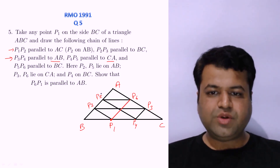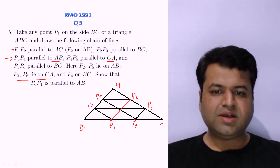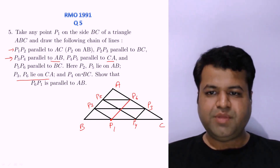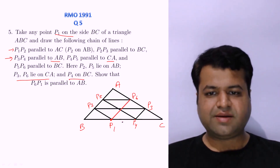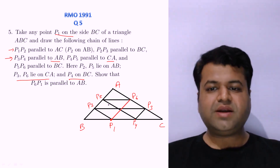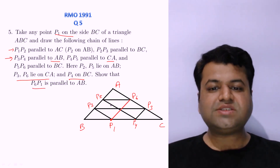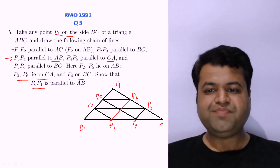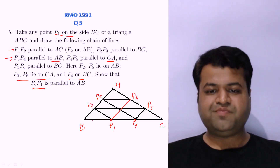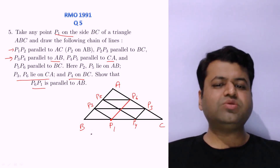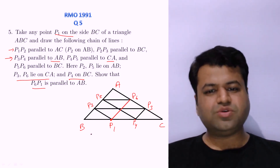P2 and P5 lie on AB as you can see in the diagram. P3 and P6 lie on CA. P1 was on the side BC and P4 should also be on BC. So there are many parallel lines in this question, but we need to prove that P6P1 — this red line — is parallel to AB. That's what we need to prove. This question is simple enough that a student in 8th or 9th class can easily solve it.